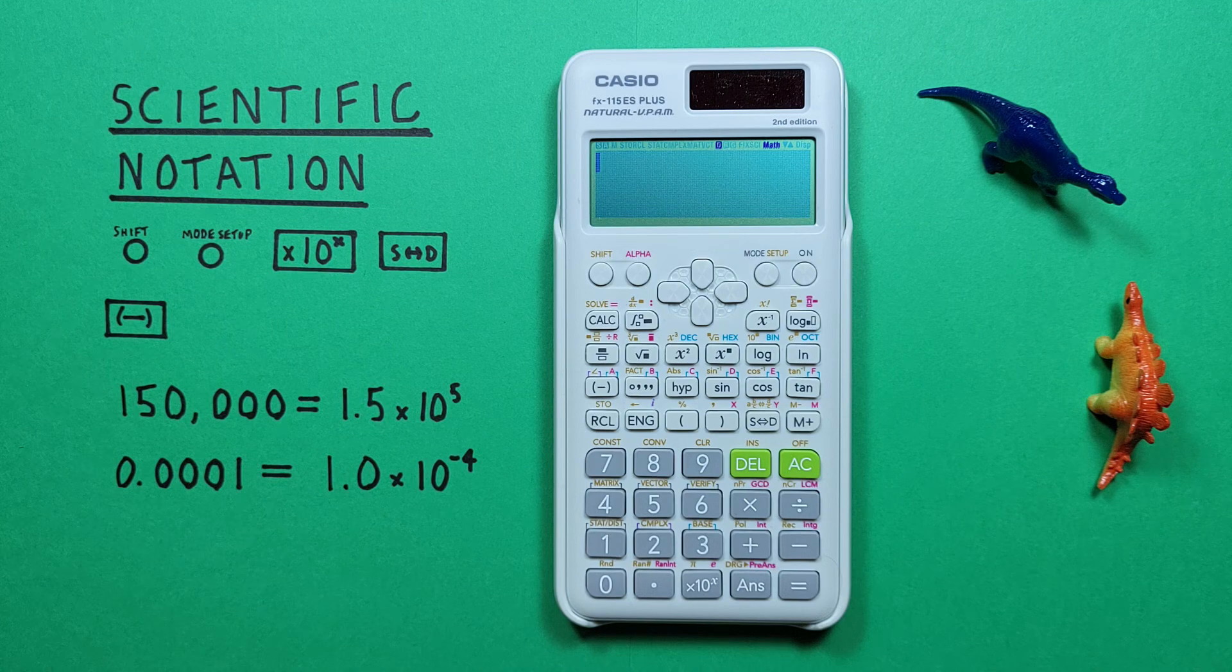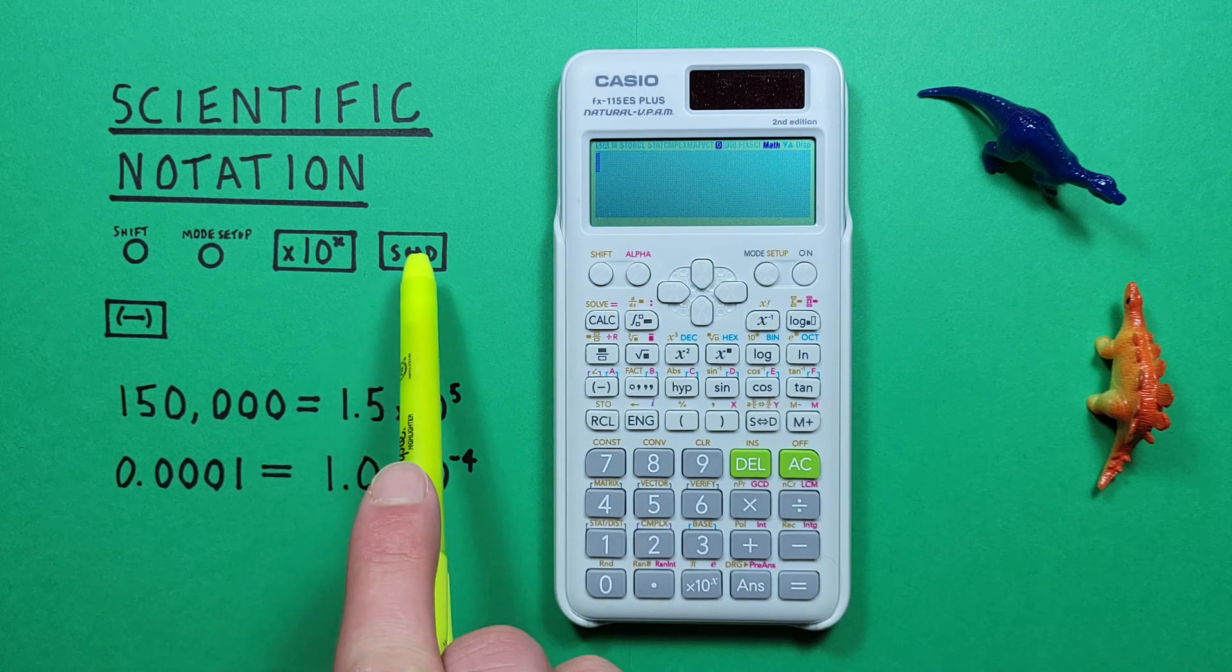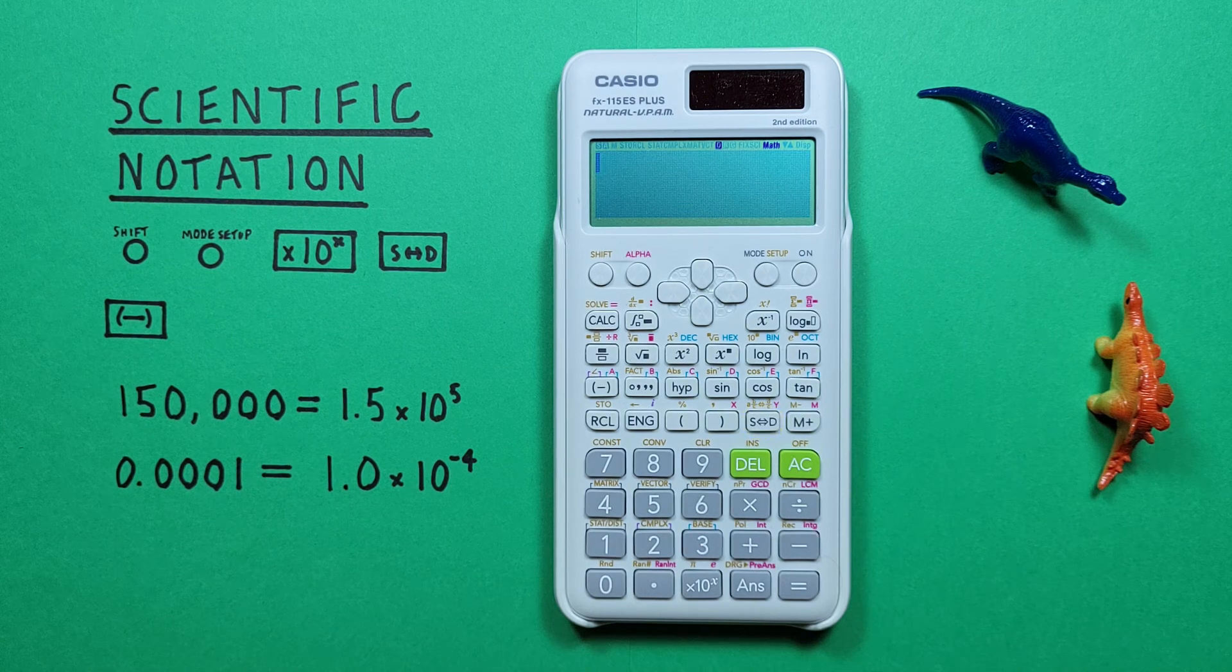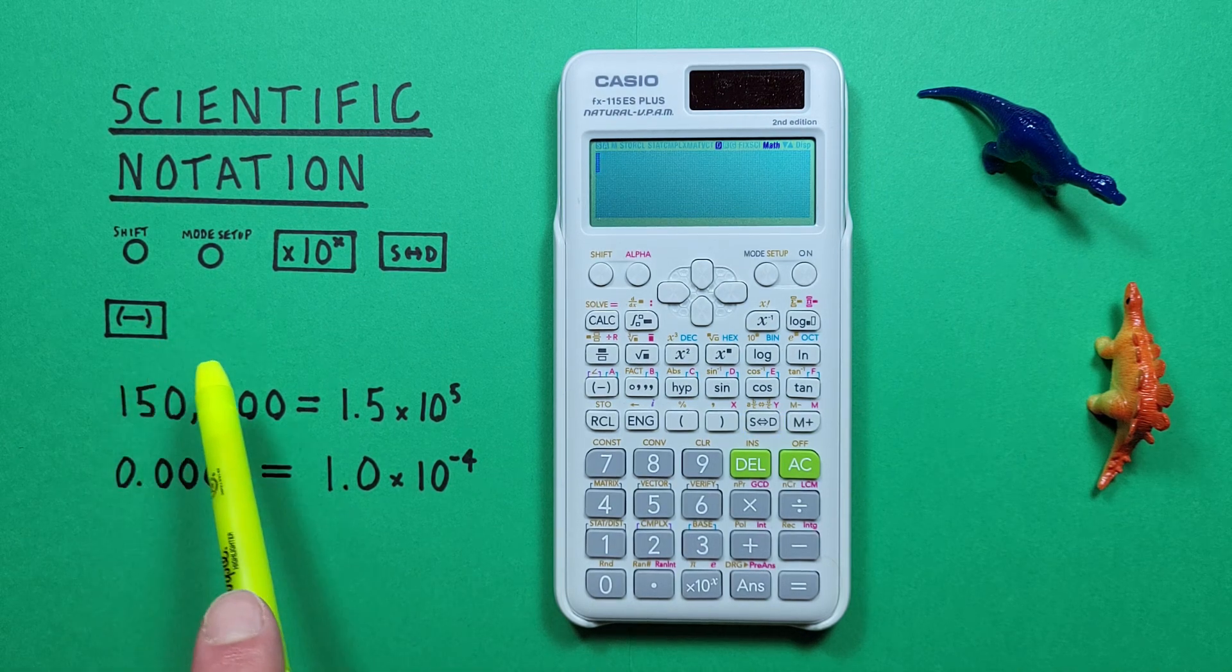The S to D or conversion key that looks like this, located here. And the negative key that looks like this, located here.